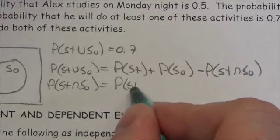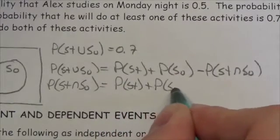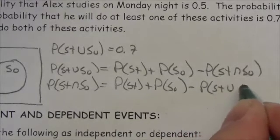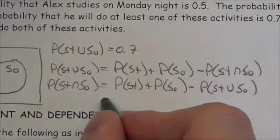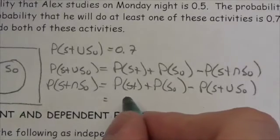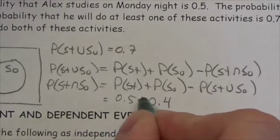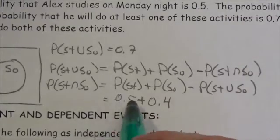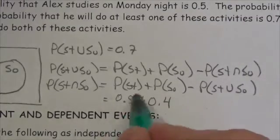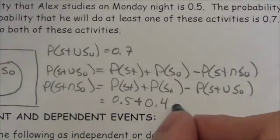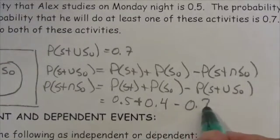That is going to be the probability of studying plus the probability of playing soccer minus the probability of doing studying or soccer. Now that's going to be 0.5 plus 0.4. By the way, it's good to see that he's more inclined to study than he is to play soccer. Just saying, as a math teacher that's kind of an encouraging thing. Minus 0.7.